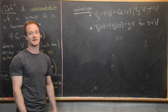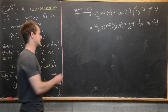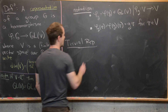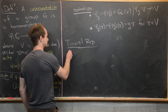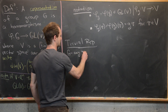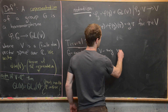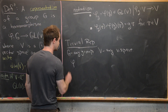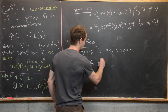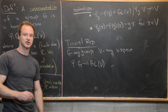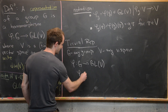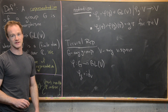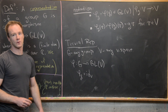Before looking at interesting examples, let's consider the trivial representation. It can be defined for any group G and any vector space V. The trivial representation phi assigns every element of the group to the identity linear transformation. It's not very informative, but it's still important to think about.